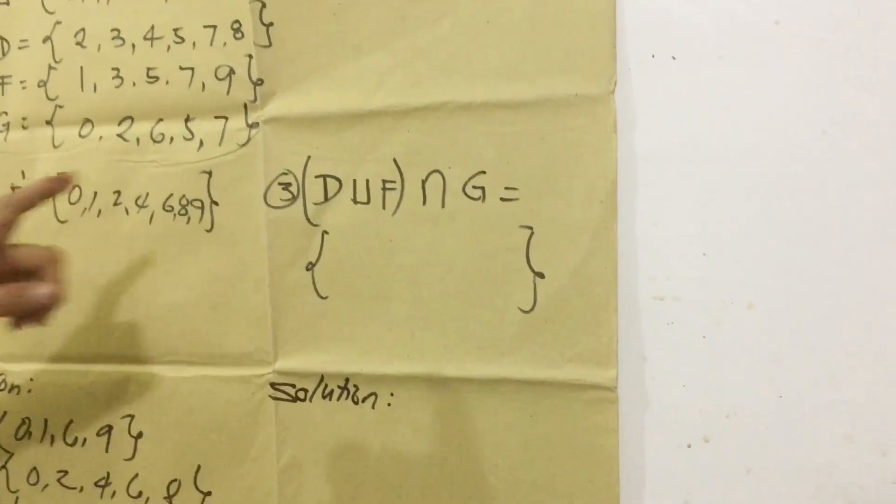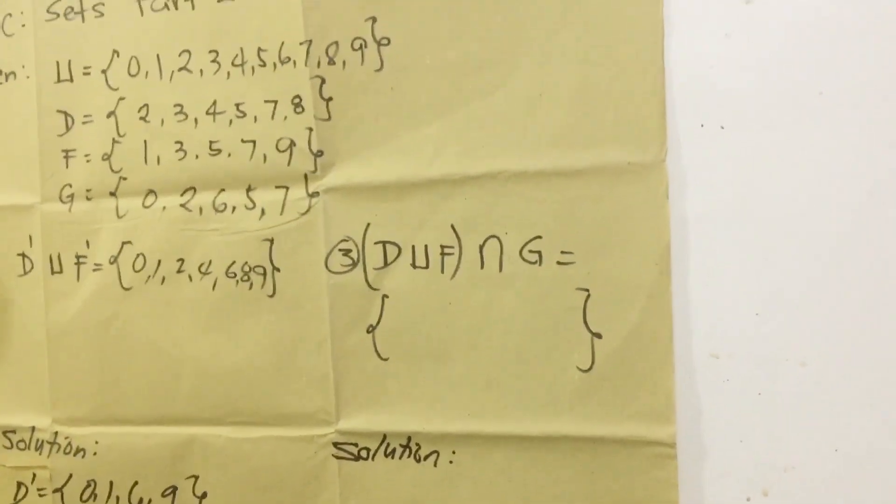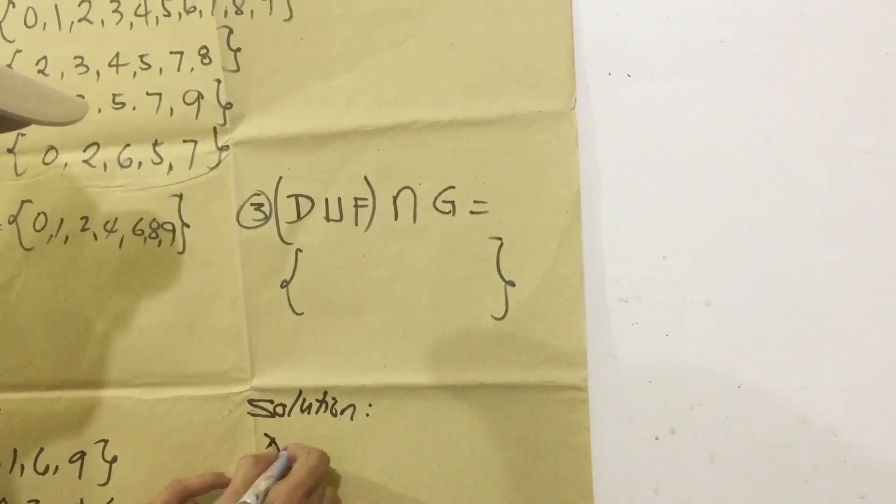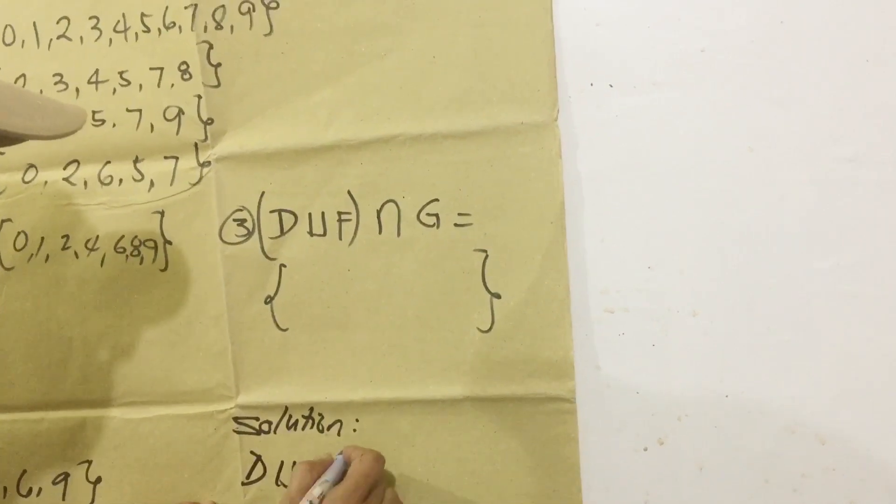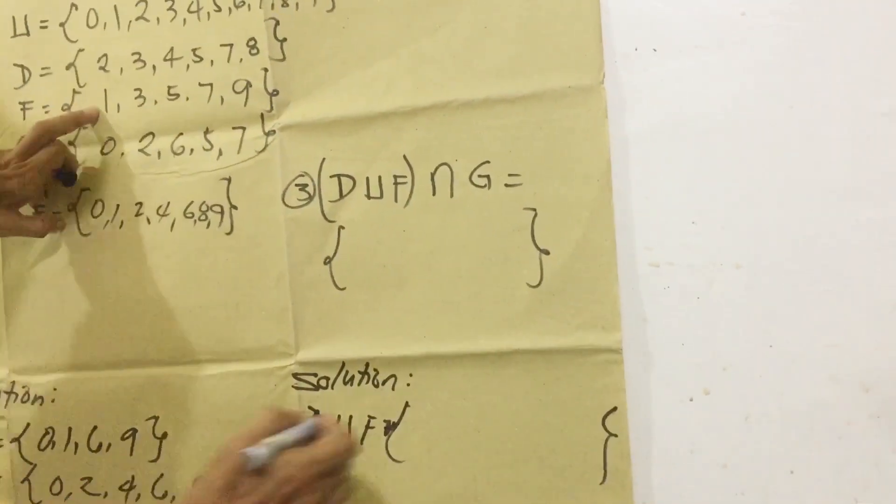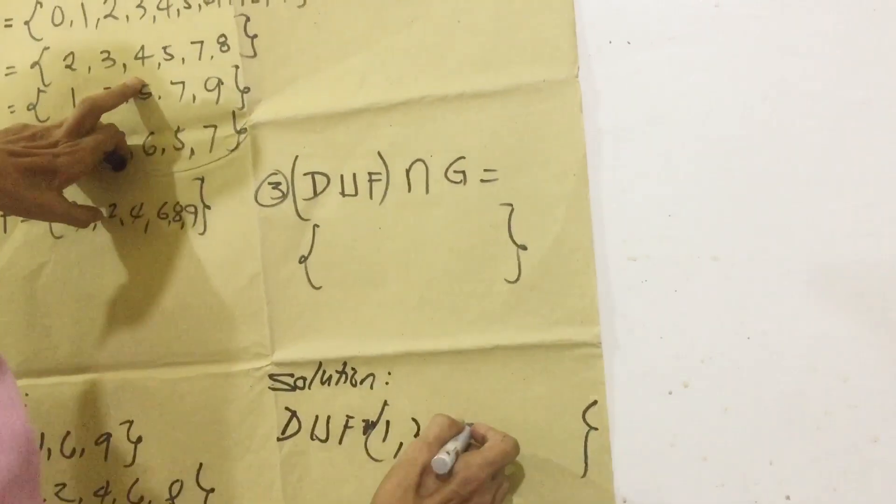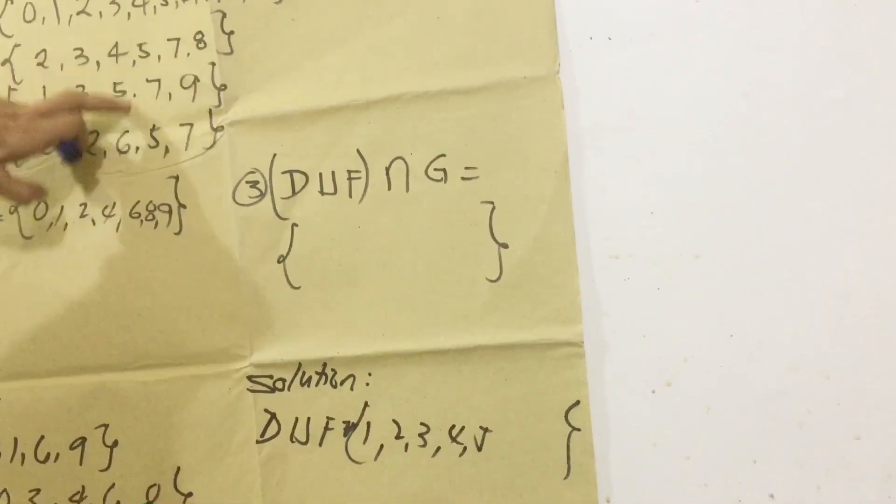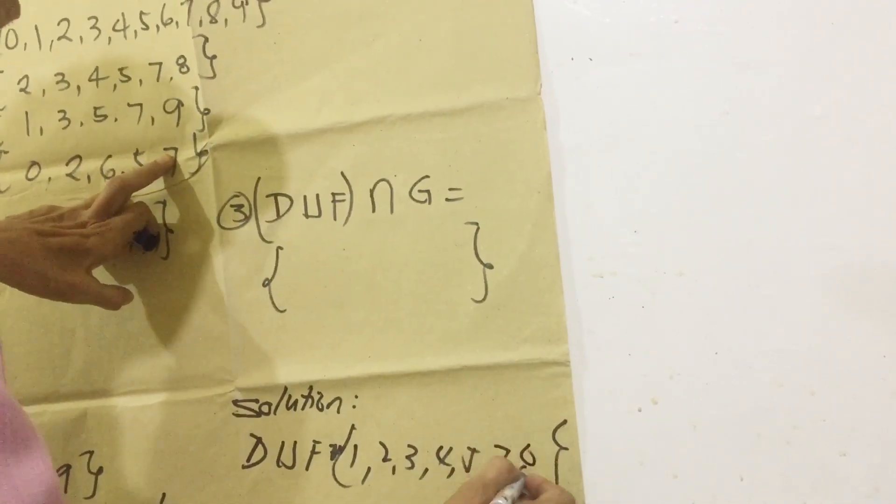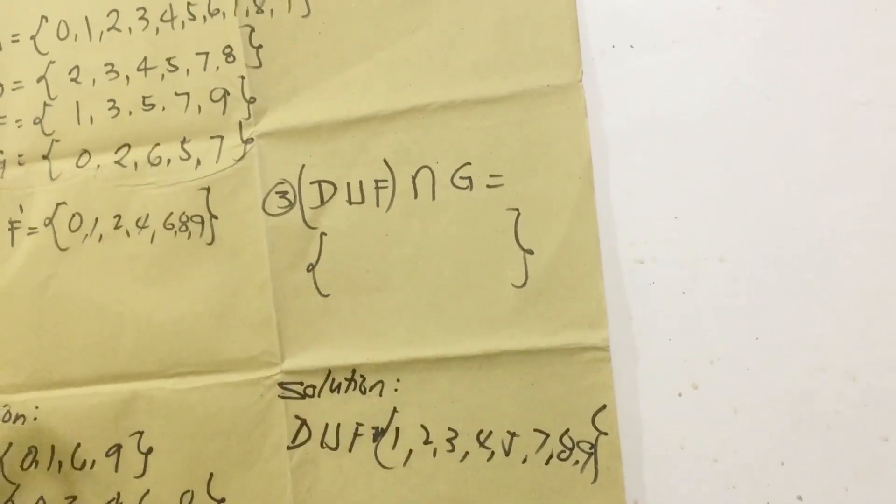Sagot na natin ang number 3. D union F intersection G. Pagsagot niyan, ay kailangan natin i-combine yung D at saka F. Elements. So D union F equals, i-combine natin: 1, 2, 3, 4, 5, walang 6, 7, meron 8, then 9. So yan na yung D union F. Napag-isa na natin yung D at saka F.